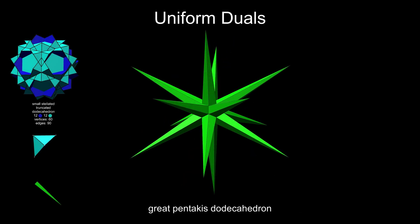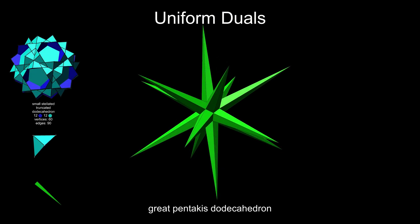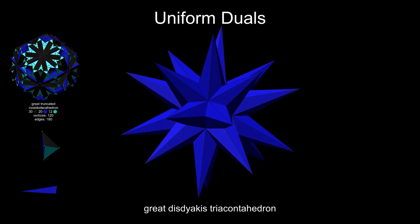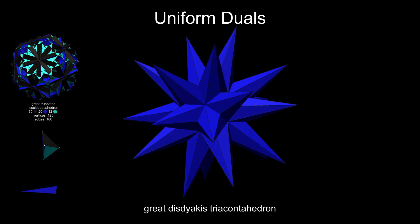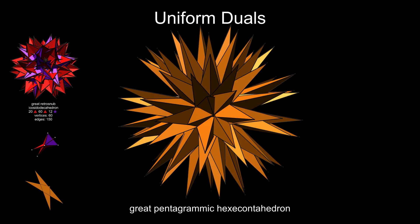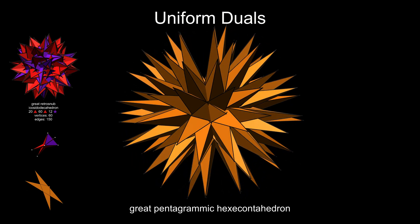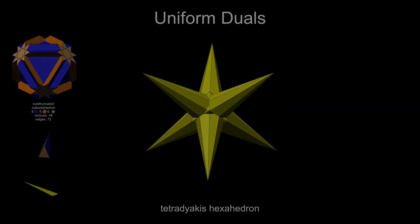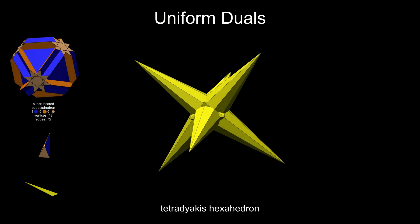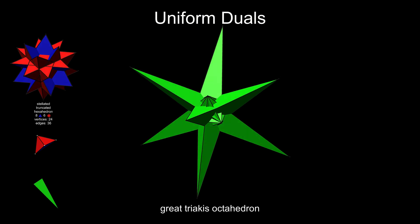The great pentakis dodecahedron is also very spiky. It has 60 highly acute isosceles triangles, with bases hidden within the figure. Other contenders in the spiky stakes are the great disdyakis triacontahedron and the great pentagrammic hexacontahedron, which has more spikes than most. Duals with octahedral symmetry tend to be less pointy, but the tetradyakis hexahedron has 6 sharp points and the great triakis octahedron has 8.